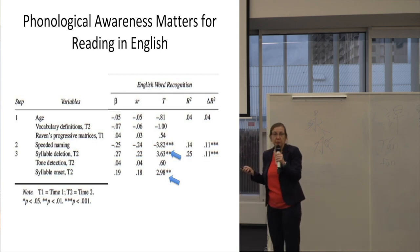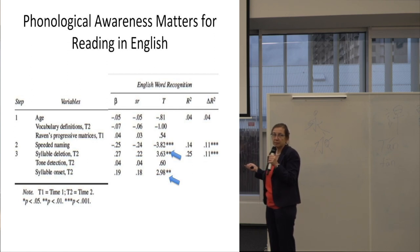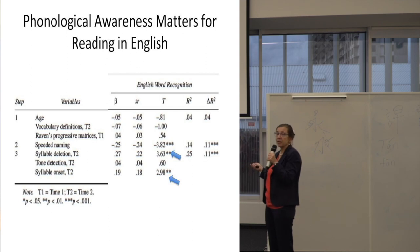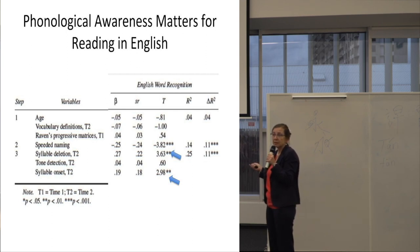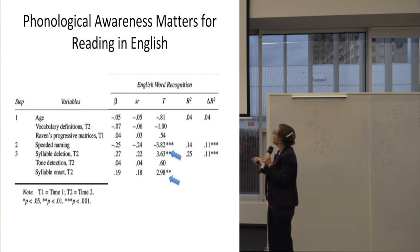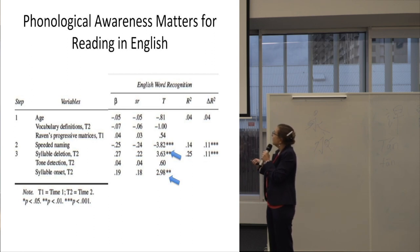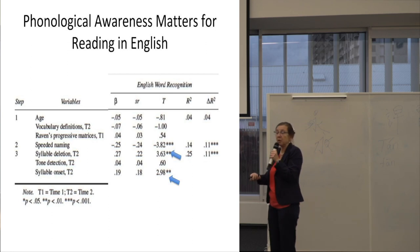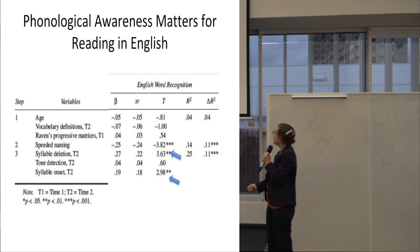What do you think is going to predict reading in Cantonese? Tone detection? Anything else? These are really our control variables — they didn't predict, but maybe. You think because it's characters. Okay. Anything else? Well, let's find out.